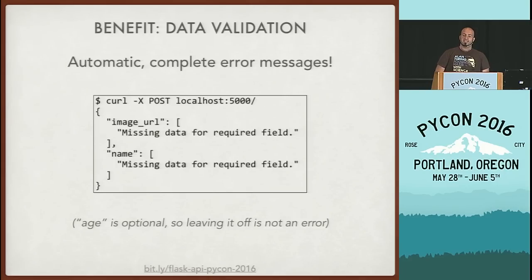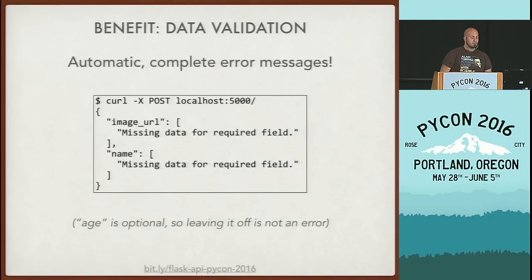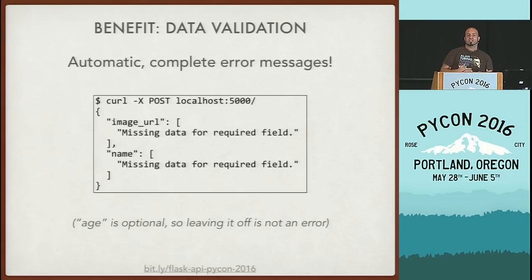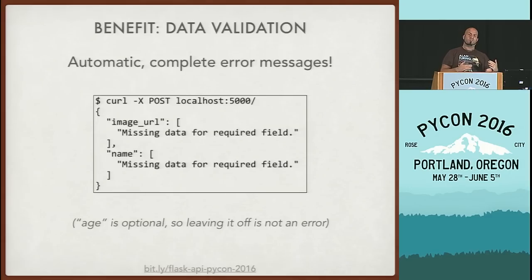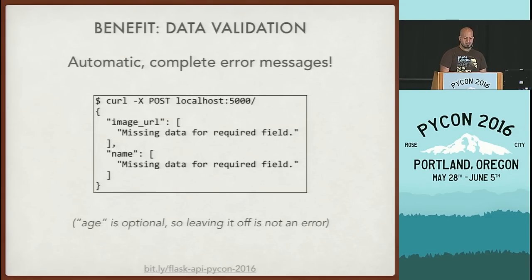We also get full data validation automatically for free. If you try to create a puppy without specifying any information, it'll tell you all of the things you need, including data types if you get them wrong. Previously we were checking fields one at a time and throwing errors individually. With Marshmallow, you can get all the errors up front, which makes it much easier to use the API.